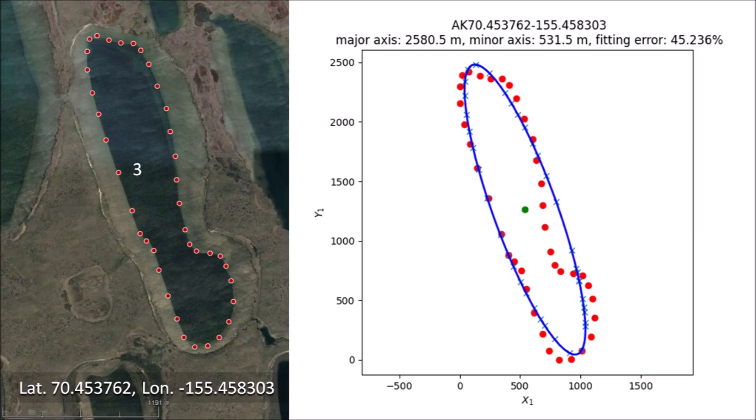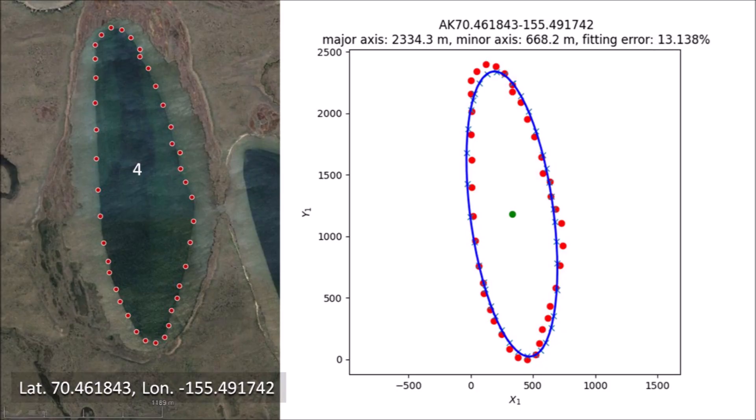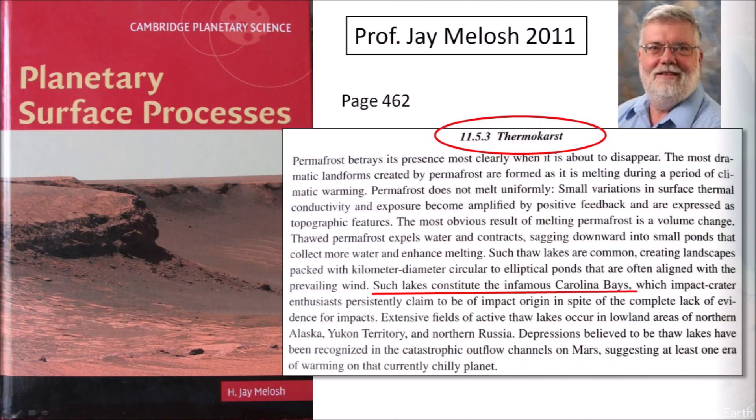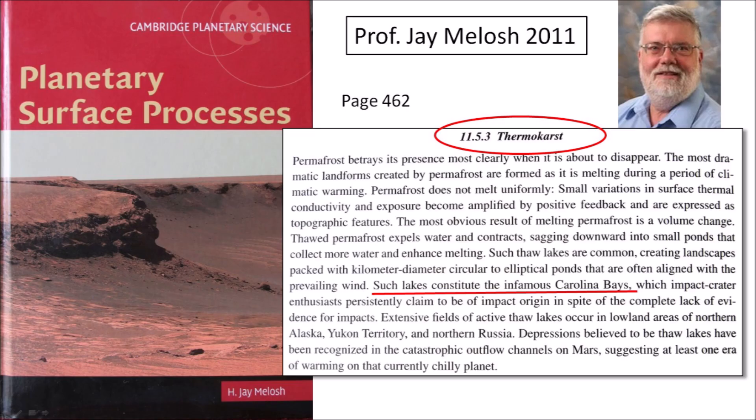Notice the extreme elongation of the ellipse — the lake has a length almost five times as big as its width. Carolina Bays do not have such elongated shapes; most bays seldom exceed a length-to-width ratio of 2 to 1. This Alaskan lake has a fitting error of 13.1%. The difference from an ellipse is still too great compared to the fitting errors of the Carolina Bays. The disparities that seem obvious by visual inspection are confirmed by the mathematical analysis. The geometrical characteristics of thermokarst lakes in Alaska differ significantly from those of the Carolina Bays. We can conclude that this book is wrong about the Carolina Bays. The Carolina Bays could not have originated from thermokarst lakes because these lakes do not have the same elliptical characteristics as the bays.